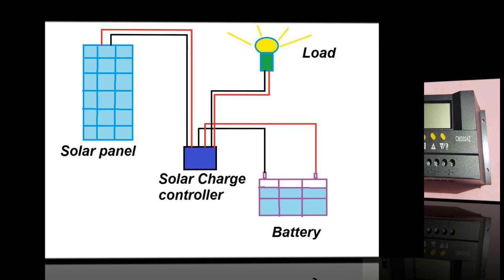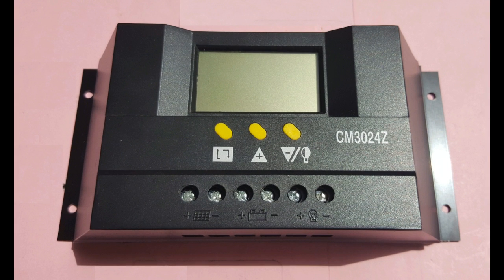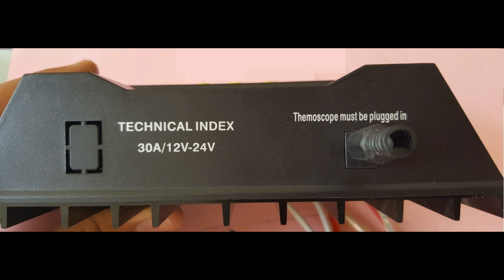Okay, a little bit about the solar charge controller that I am using. The controller that I am using is CM3024C. This charge controller comes in different ampere ratings like 10 amperes, 20 amperes, and 30 amperes. The one that I am using is 30 amperes. It's easily available in the market and also cheap in price.